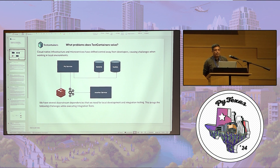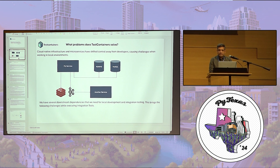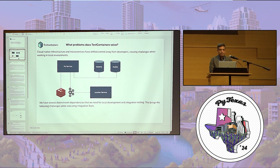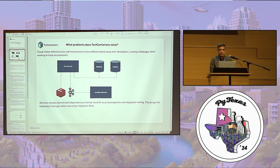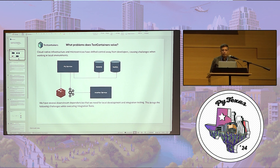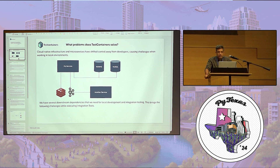In any cloud-native microservices architecture, there are several downstream dependencies, and the architecture can be polyglottic — meaning it may have more than one database, supporting both RDBMS and NoSQL. This kind of architecture presents a couple of problems for developers: running the infrastructure locally, and writing efficient integration test cases.